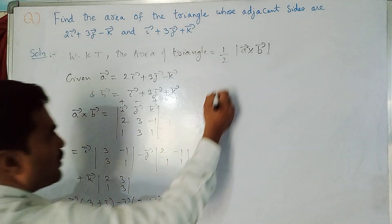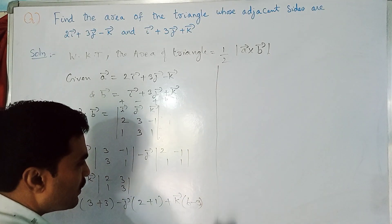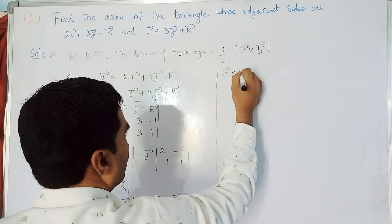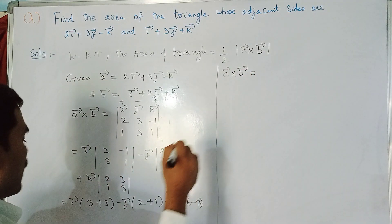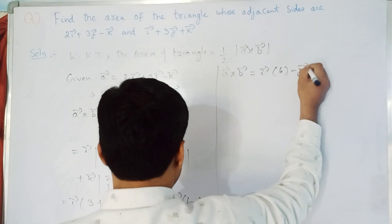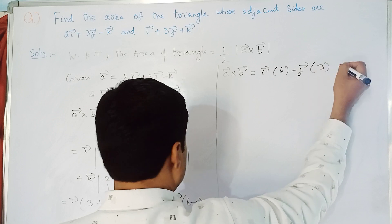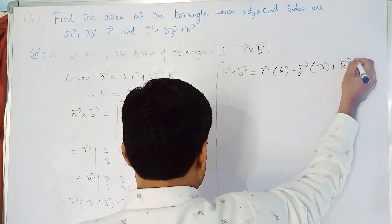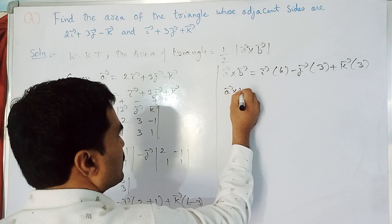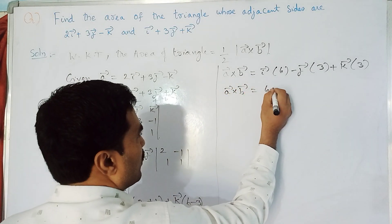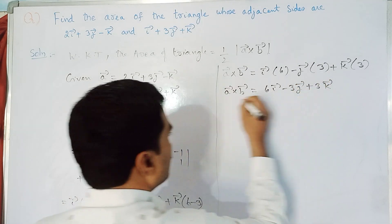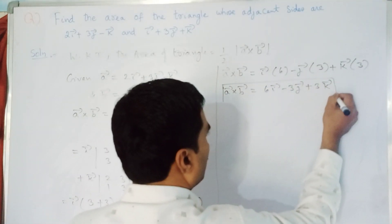Simplifying further: a × b = i(6) - j(3) + k(3). So a × b = 6i - 3j + 3k.